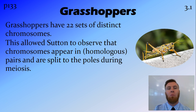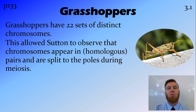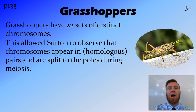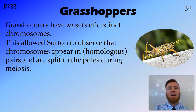Sutton worked with grasshoppers. One advantage is that they have 22 sets of distinct chromosomes, so you can look inside the cell, and by the length and shape of the chromosomes you can work out which ones belong to which sets. Because of this, he was able to observe that chromosomes appear in pairs — we now call these homologous pairs — and that these are lined up along the equator and then split to opposite sides during meiosis, so that one set ends up in each daughter cell.